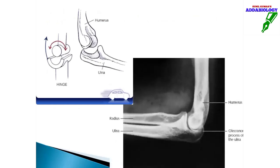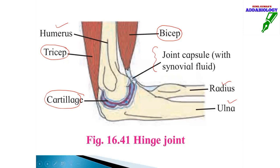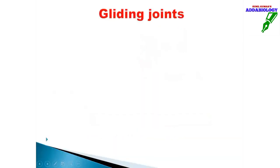Looking at the hinge joint diagram: we have the humerus, radius, and ulna. The ulna has a spoon-shaped process called the olecranon process, and this allows movement. You can move your hand only straight in one direction — showing only 180 degrees of movement. The diagram also shows radius, ulna, cartilage, bicep, tricep, humerus, joint capsule, and synovial fluid.